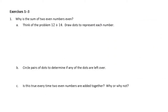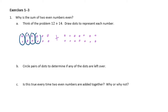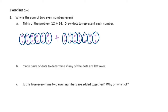We're going to prove it. Why is the sum of two even numbers always even? Think of the problem 12 plus 14. Draw dots to represent each number. We draw dots for 12 and 14, then circle pairs of dots to determine if any are left over. We circle the pairs — we don't have one left over. If we had one left over, it wouldn't be even, but we don't.